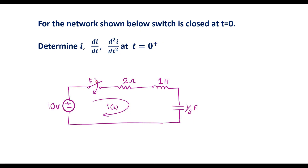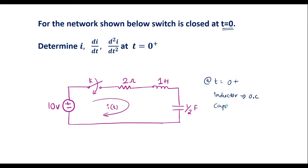At t equal to 0, the switch will close. The time immediately after is known as 0 plus. And as we know, at t equal to 0 plus, the inductor acts like an open circuit and the capacitor acts like a short circuit.